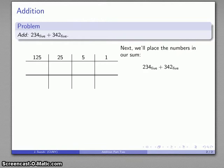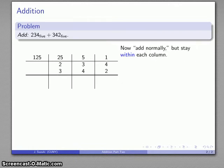Let's go ahead and put the two numbers of our sum: 234 base 5 plus 342 base 5. It's convenient to work from smallest place to largest place. There's my two numbers, and I'm going to add normally, but here's the important thing: I want to stay within each of the columns.